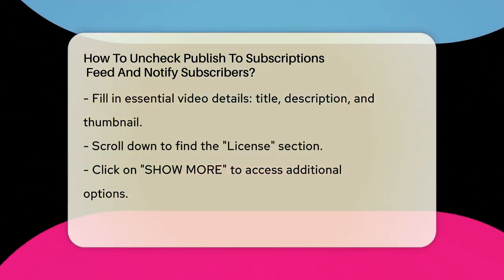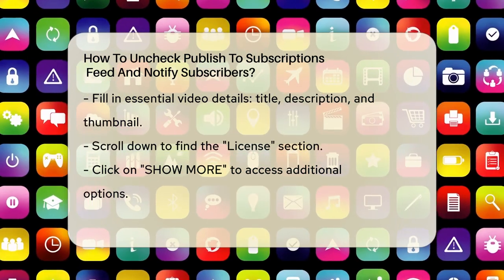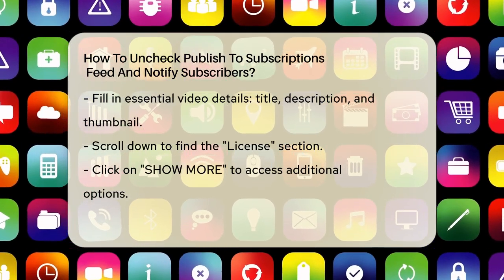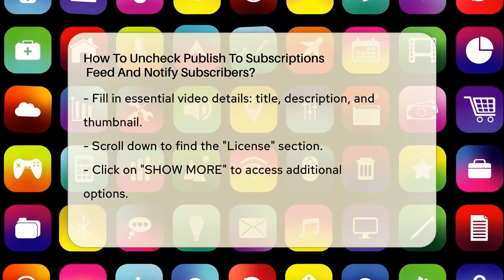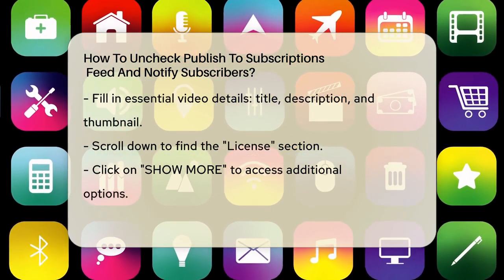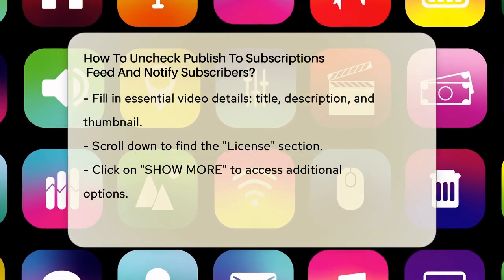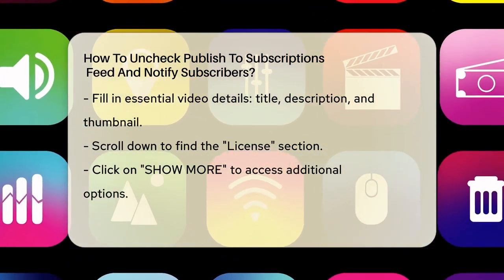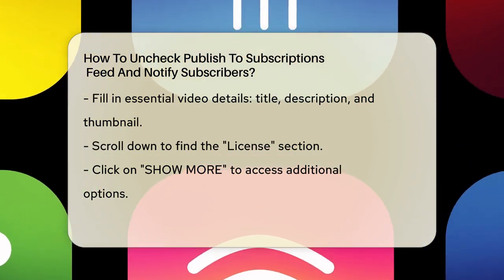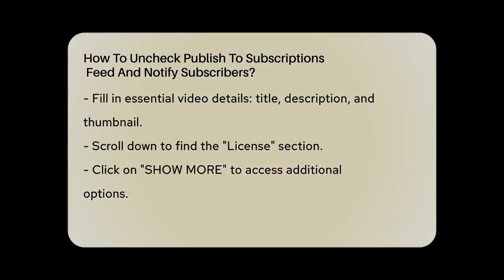Here's the important part. You need to scroll down to the License section. To do this, click on Show More at the bottom of the video details page. Under the License section, you'll see a checkbox labeled Publish to Subscriptions Feed and Notify Subscribers.